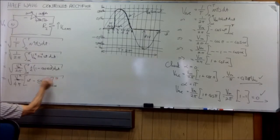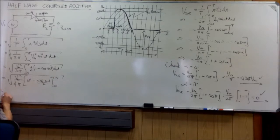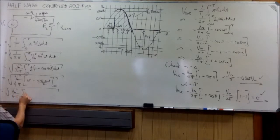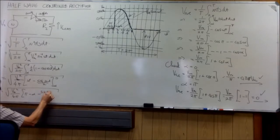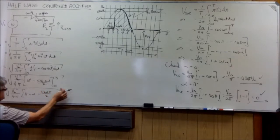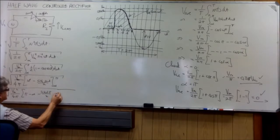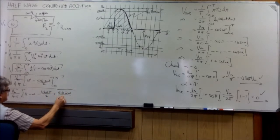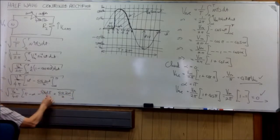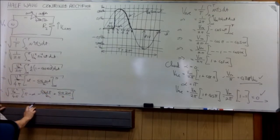And the limits are alpha and pi. And that is equal to the square root of v max squared over four pi. Pi minus alpha minus the sin of two pi over two. Plus the sin of two alpha over two. That one is zero. So our formula now becomes.